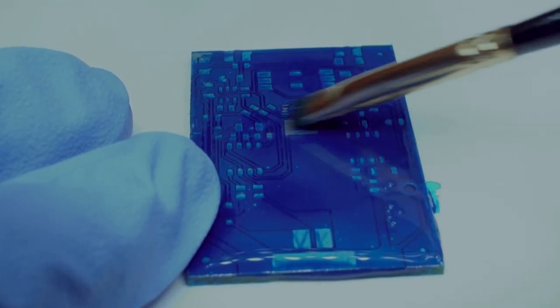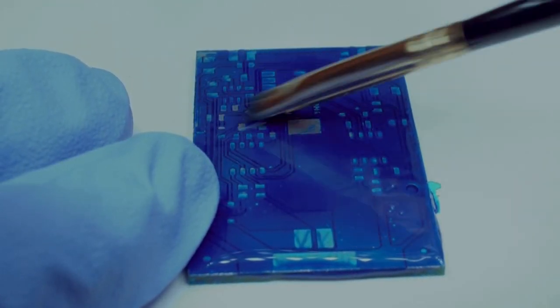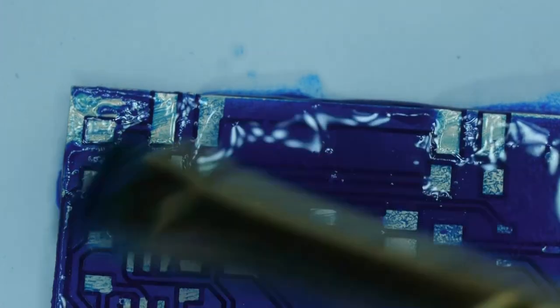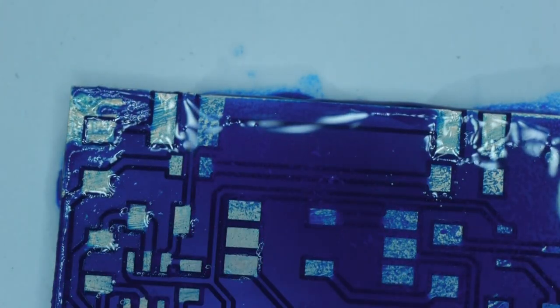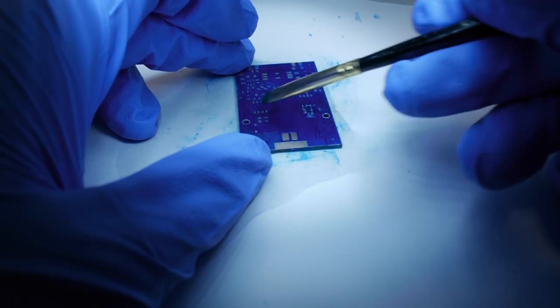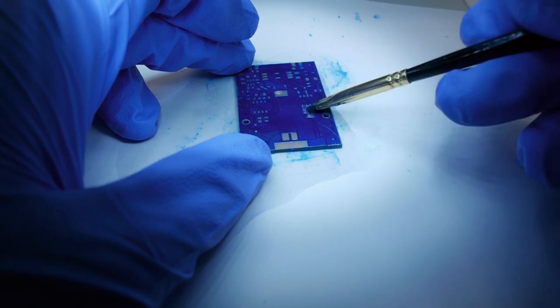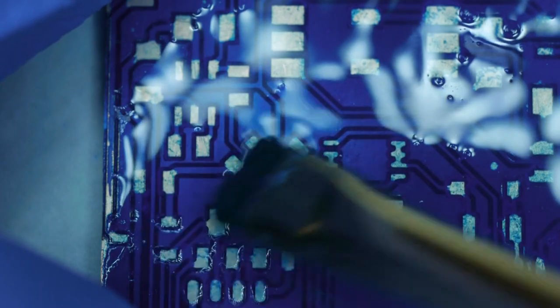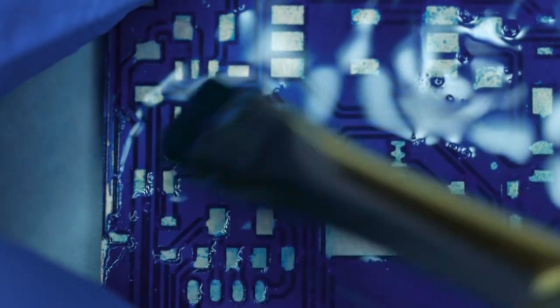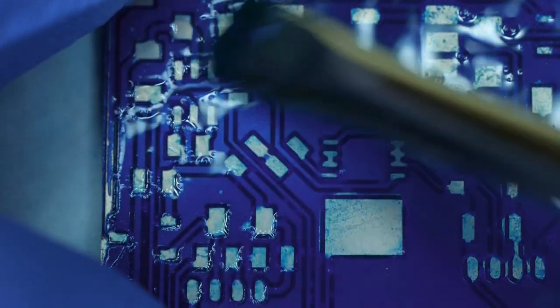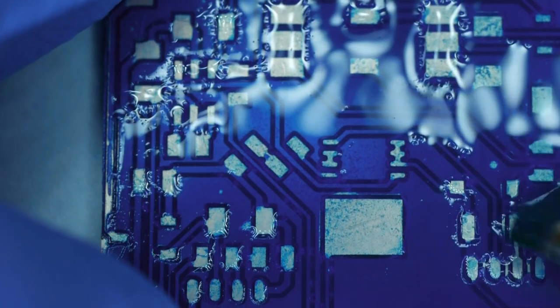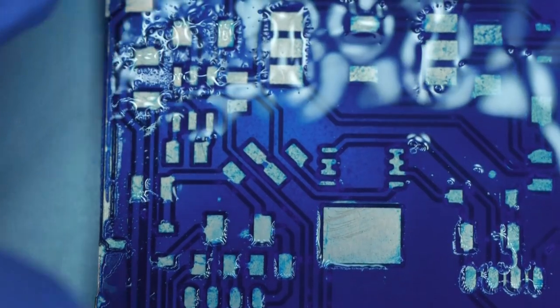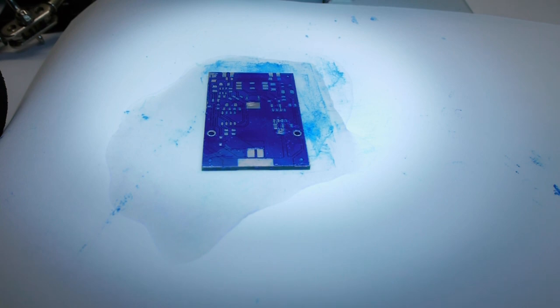Then use a good brush. Just be pretty gentle with this, as the solder mask paint may come off if you brush too hard. Then dry it off.